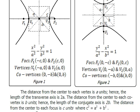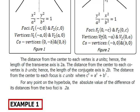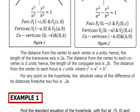The distance from the center to each focus is c units, where c is equal to the square root of a-squared plus b-squared. From the center going to one focus is c units, and to the other focus is also c units. For any point on the hyperbola, the absolute value of the difference of its distances from the two foci is 2a.